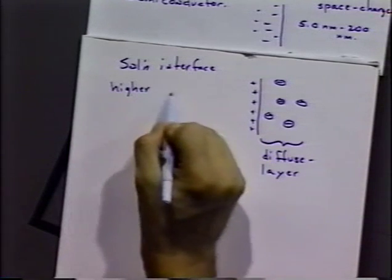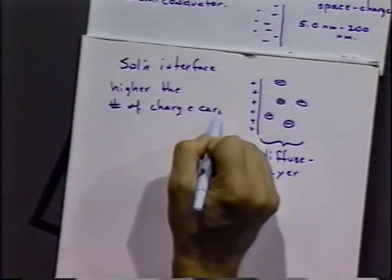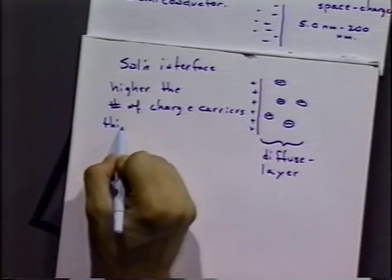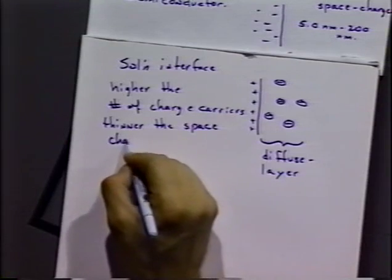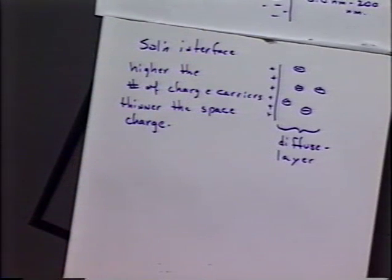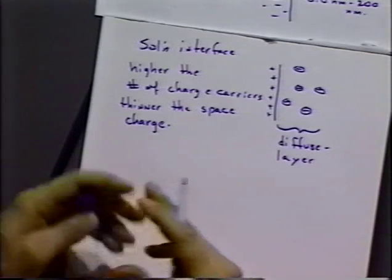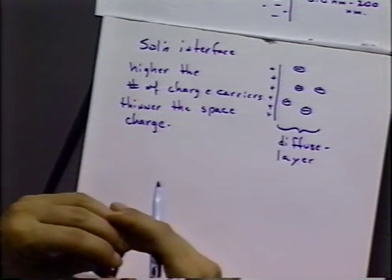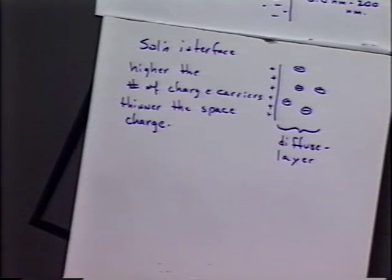We can make a general statement: the higher the number of charge carriers, the thinner the space charge. A diffuse layer in electrochemistry may extend out, say, 200 nanometers with a very dilute solution of electrolytes, say a few millimolar concentration of potassium chloride, to five nanometers or so for a one molar or saturated potassium chloride solution. So one way to reduce the space charge effects is to make the concentration of charge carriers higher.